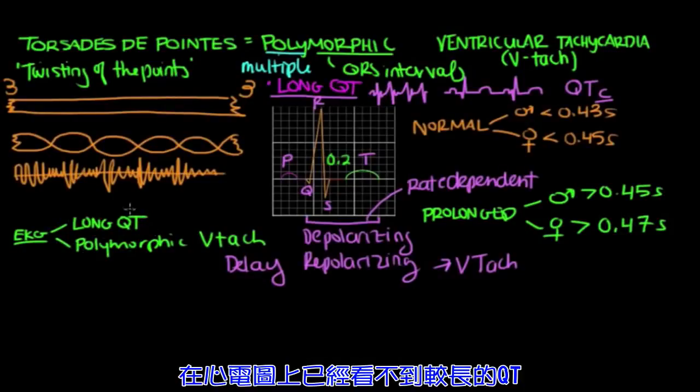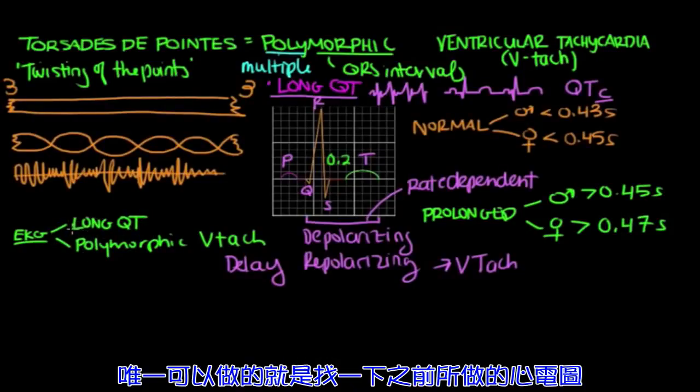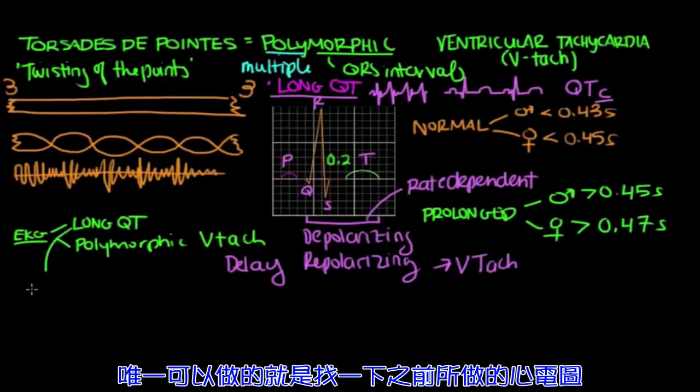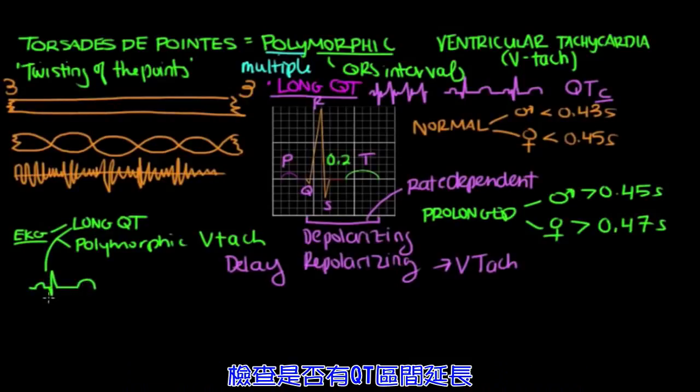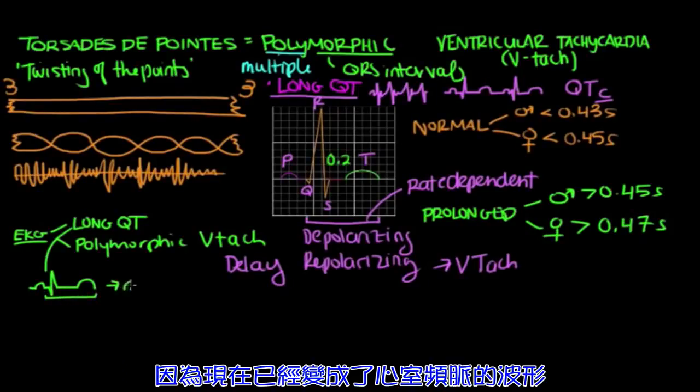And you're not going to see the long QT on EKG. What you can do, though, is look at old EKGs, and you can look at the old EKG and see if you notice a prolonged QT interval, which has now turned into this polymorphic V-tach.